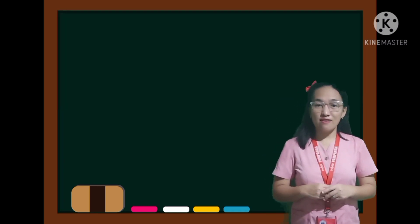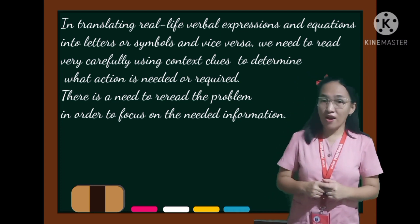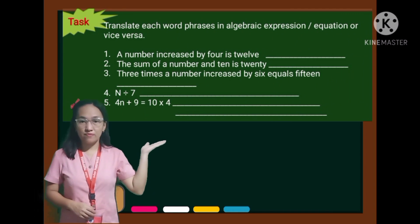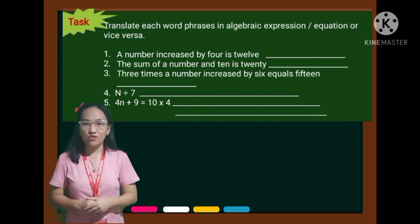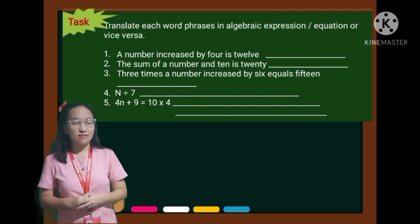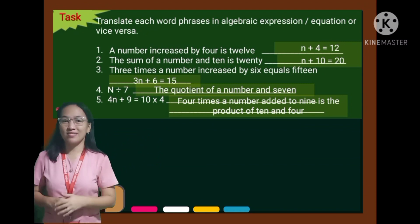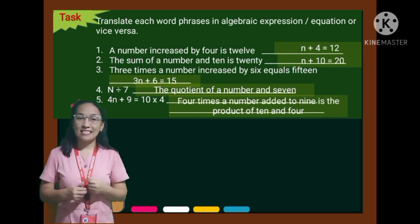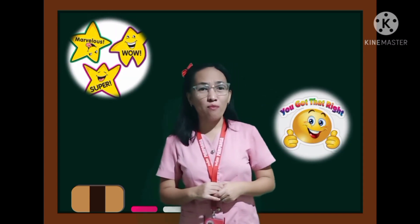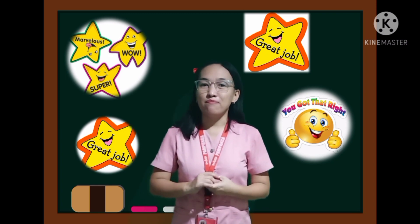To wrap it up before giving them an independent activity, let them read this. Tell your child to repeat or reread it for mastery. For their independent activity, my dear parents, you may give this for them to answer. You may pause this video while kids are answering, or do some household chores while waiting for them to finish. Going back to check their answers — here are the correct answers. Having a productive day for us parents and kids is really a fulfilling one. Don't forget to give praises or positive comments if they got the correct answers. This is also a technique to make them do their work well and be inspired to study.